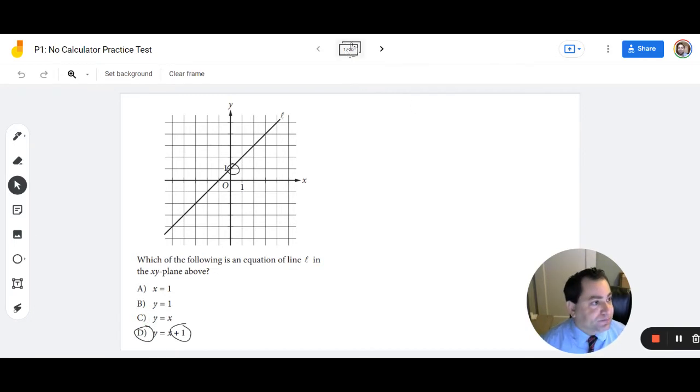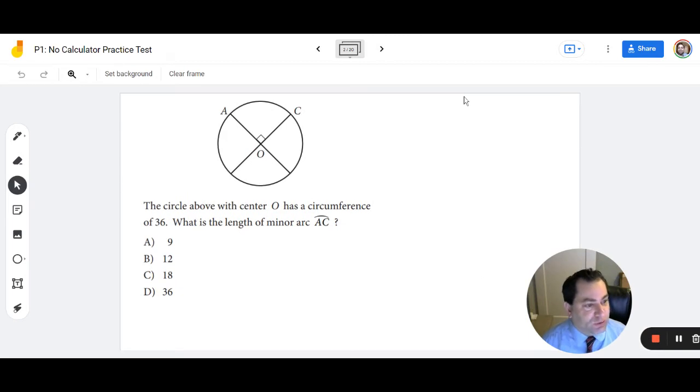Let's move to number two. The key to number two is the idea of circumference. So circumference is the perimeter of a circle. And when they talk about the length of minor arc AC, they're talking about the measure of part of the circumference AC. So even if you didn't know that there were four equal parts, your best estimate would be to take the circumference and divide by four and get nine, which is answer A.